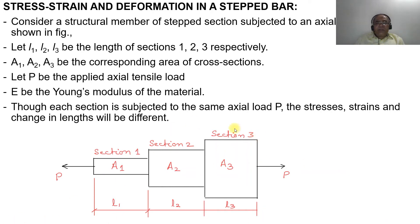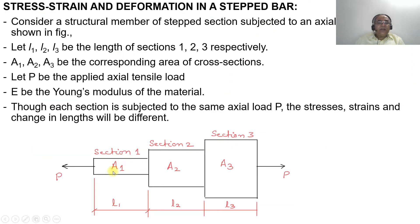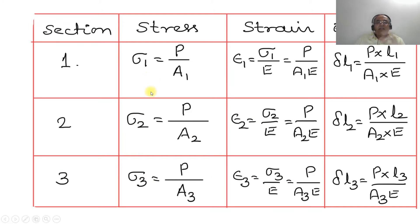Though each section is subjected to the same axial load P, the stress, strain, and change in length will be different. For section 1, the stress sigma1 equals load divided by cross-sectional area A1, so sigma1 = P/A1. The strain epsilon1 equals sigma1 divided by E, which gives epsilon1 = P/(A1·E).